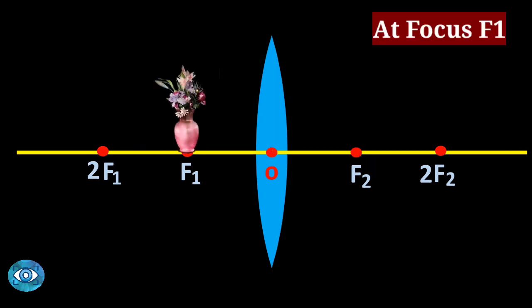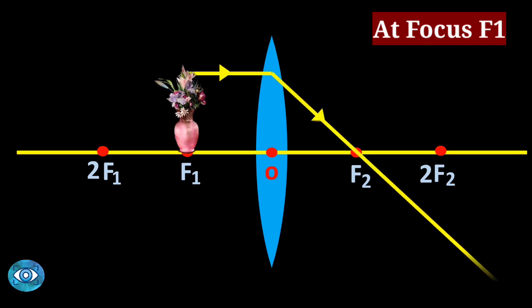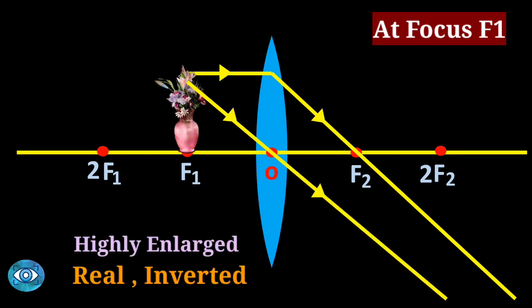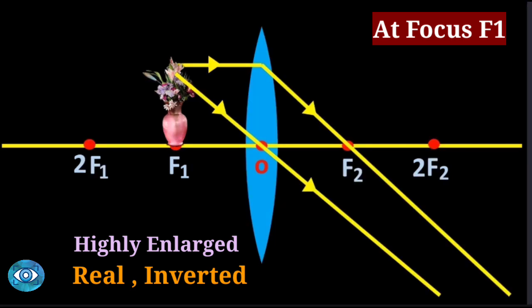Case five: the object is at focus f1. The light rays are not meeting anywhere — the rays go to infinity. So a highly enlarged image will form in this case.